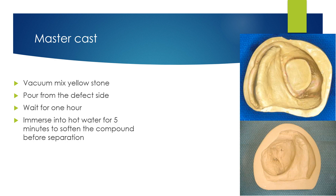The master casts should be poured using vacuum-mixed yellow stone. Pouring should start from the defect side, then wait for one hour before immersing in hot water for five minutes to soften the compound before separating the cast from the impression.